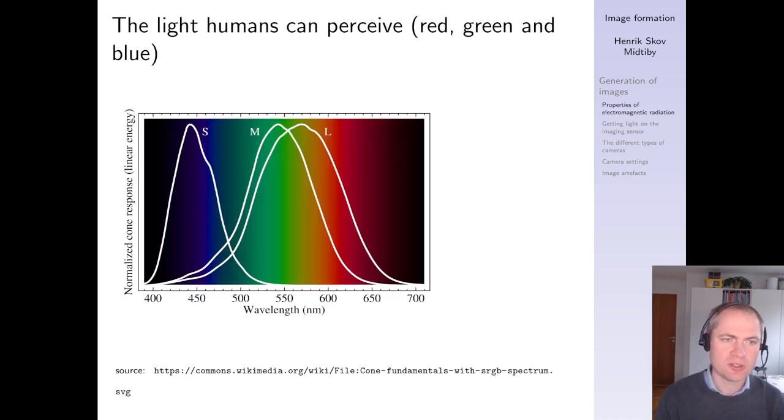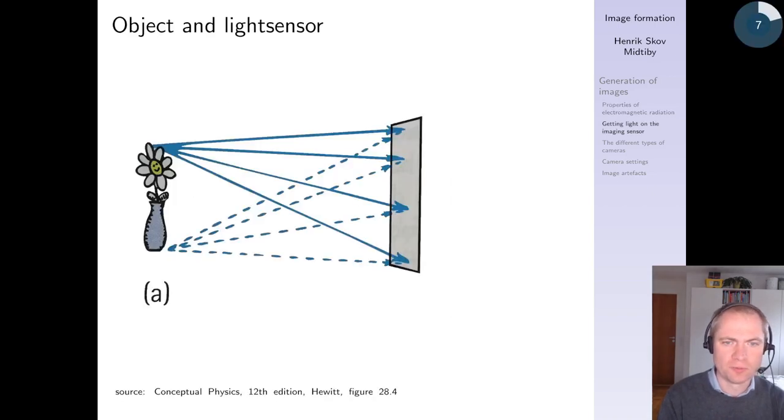If we look at the human eyes, it has three different cones that are sensitive towards different wavelengths or different types of light. We have the short cones that are sensitive to the blue light, the medium cones that are sensitive mainly towards the green light, and the large cones that are sensitive towards the red part of the spectrum. So these were the different types of light.